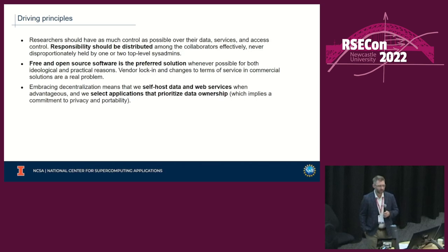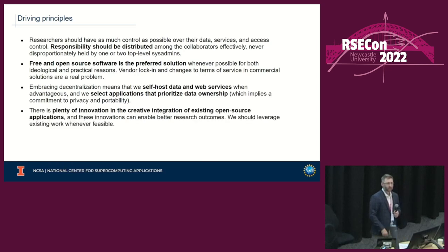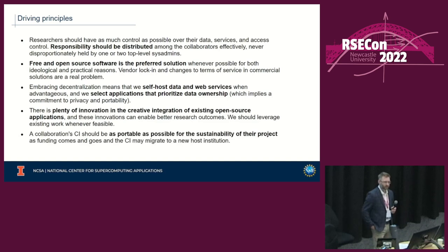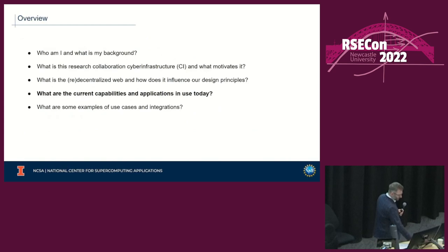Embracing decentralization means we self-host data and web services when advantageous, and we select applications that prioritize data ownership — implying a commitment to privacy and portability. There's plenty of innovation in the creative integration of existing open-source applications that can enable better research outcomes. We leverage existing work whenever feasible. The collaboration CI should be as portable as possible for sustainability — funding agencies say that, but there's often not a technical way to achieve it in practice.